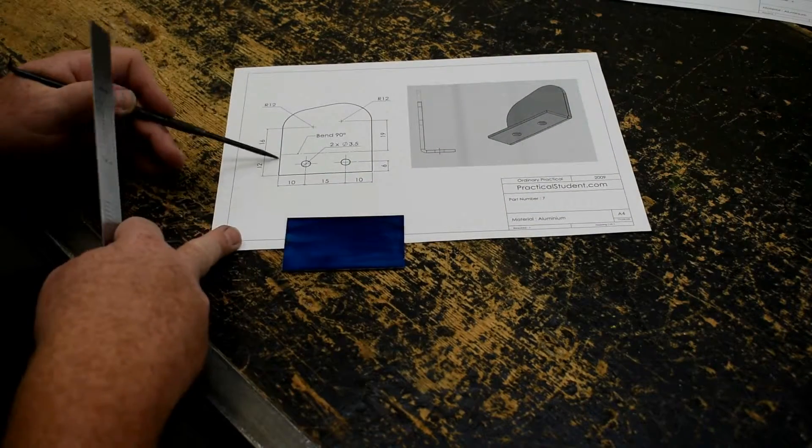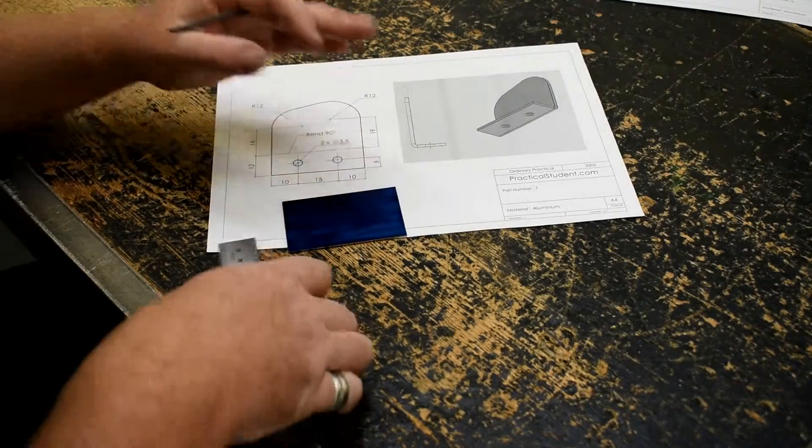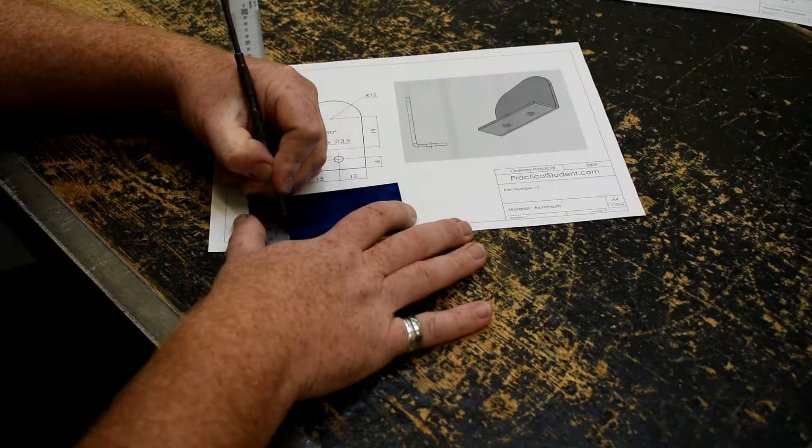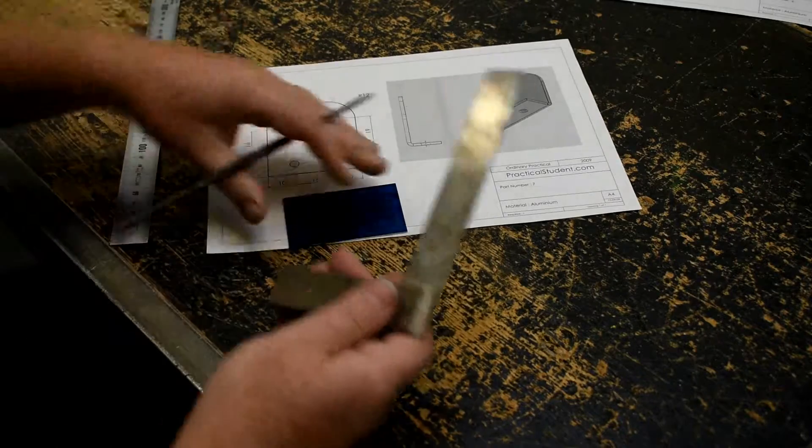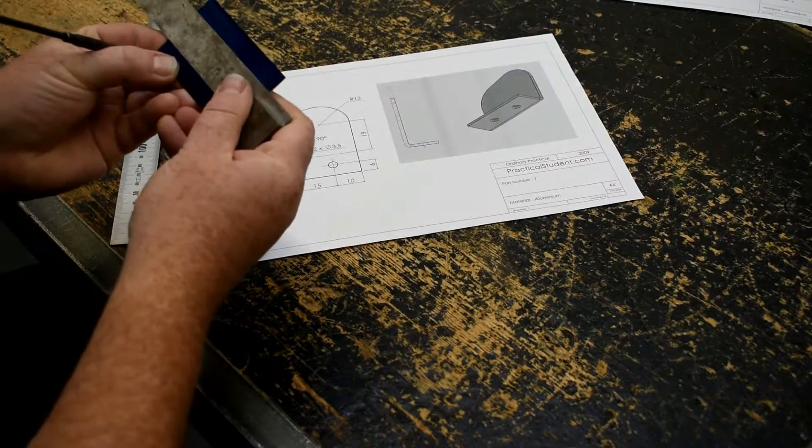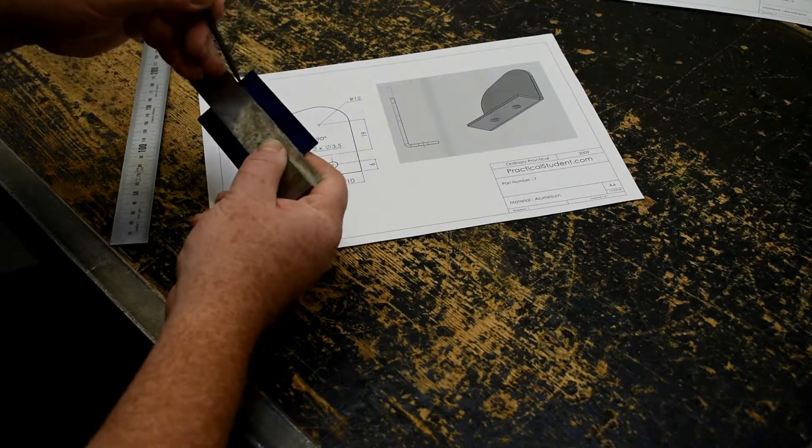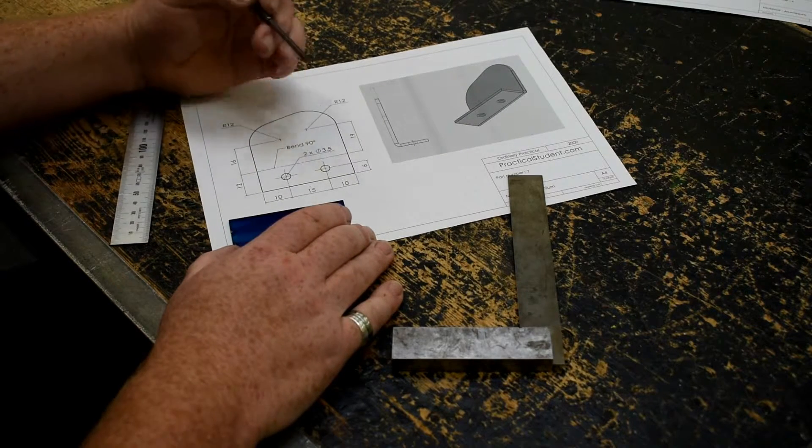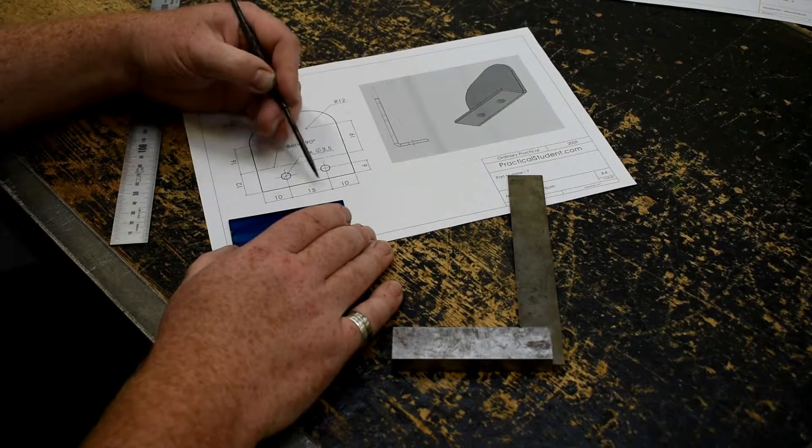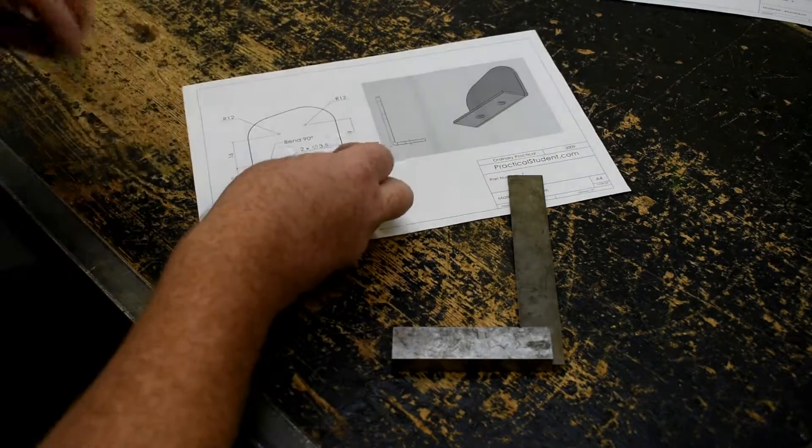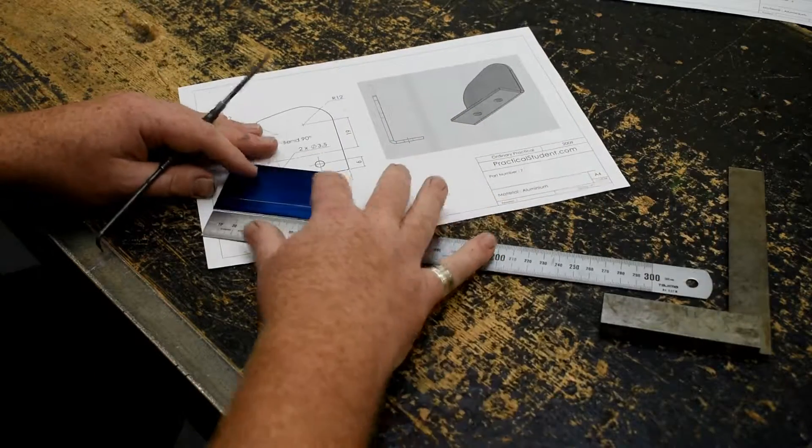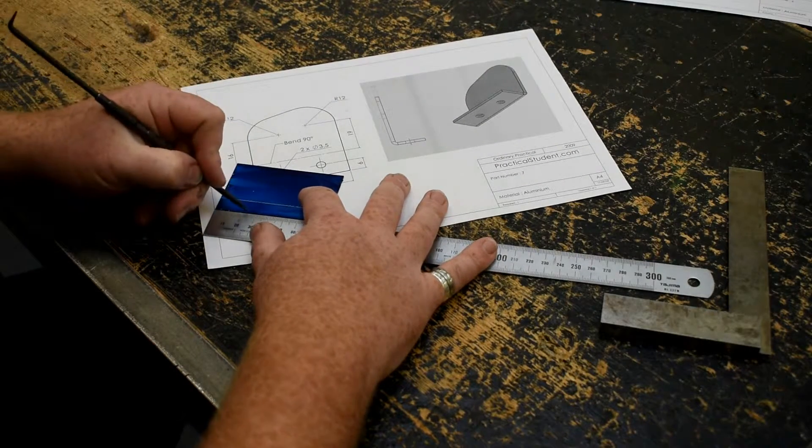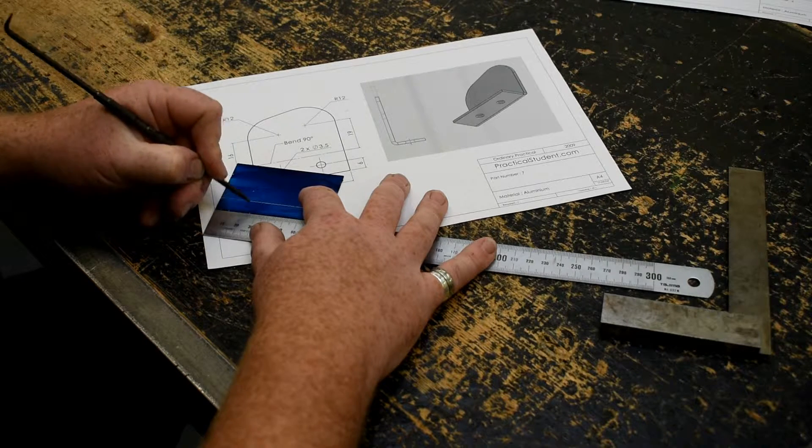The height of the box is 12 millimeters, so I'm going to measure up 12 millimeters and T square line across. The width of both boxes is 10 plus 15 plus 10 which is 35. I'm going to mark the 10, the 15, and the 10 from both sides to make life easier.